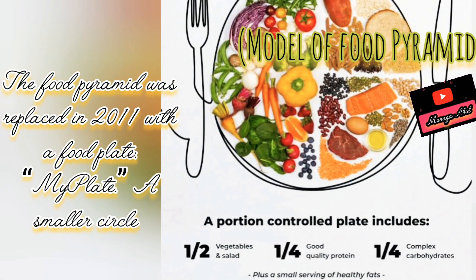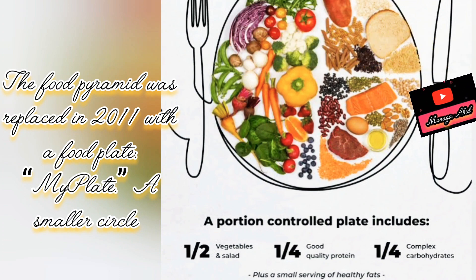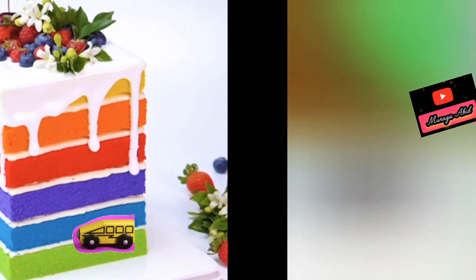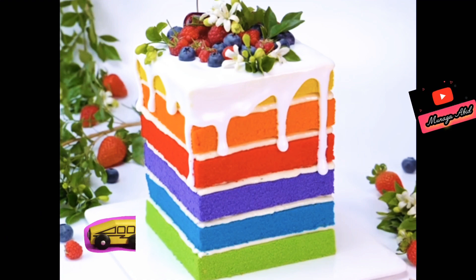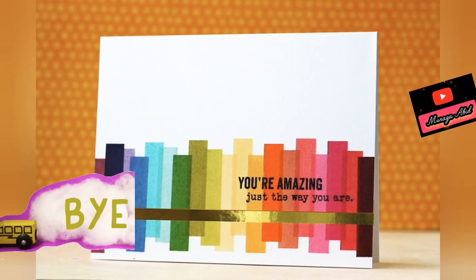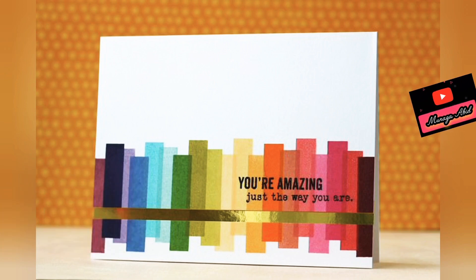The food pyramid was replaced in 2011 by a food plate that has half vegetables, one quarter quality protein, and one quarter complex carbohydrates, with some good fats. You can also make My Plate. But don't eat this beautiful cake as much as My Plate suggested — this is not good for your health. Thanks for watching this video. Allah hafiz.